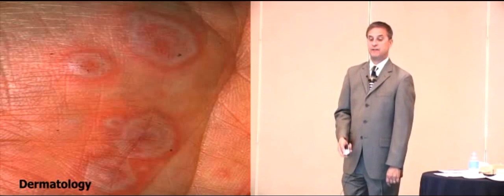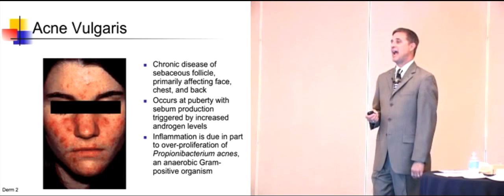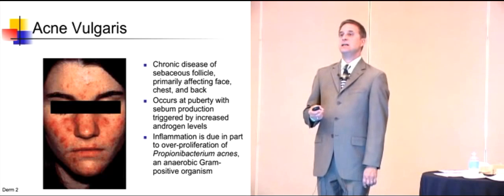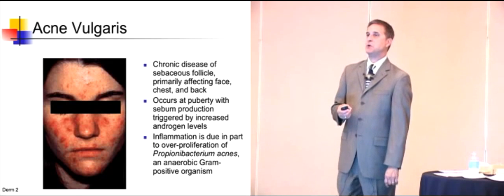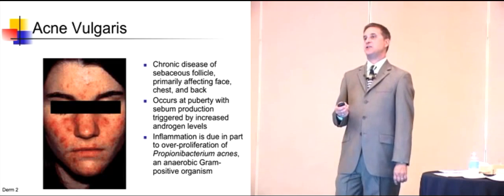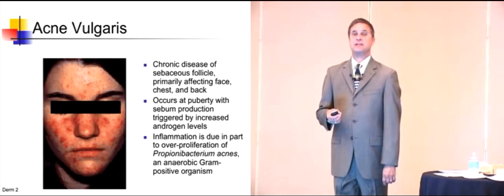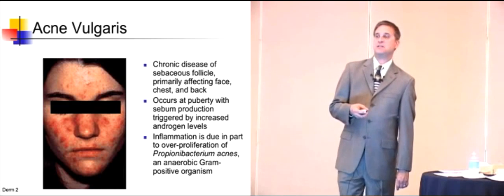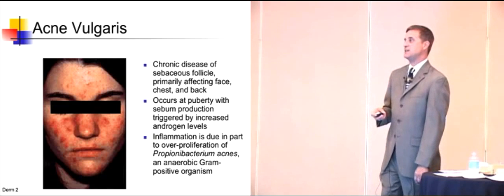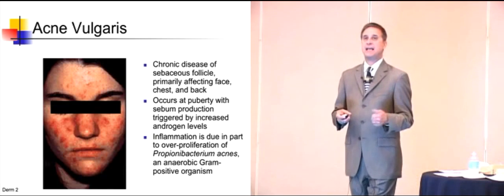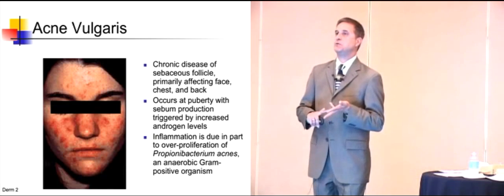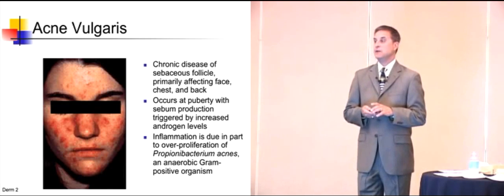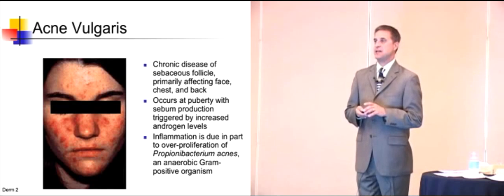We'll run through some common presentations, starting with acne — a chronic pilosebaceous disease that begins at the onset of puberty. At puberty, androgens increase sebum production, leading to micro-plugging, inflammation, and rupture of the cyst. You can progress from a blackhead or whitehead to a red pimple, cyst, or nodule, and anywhere in between.